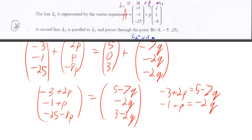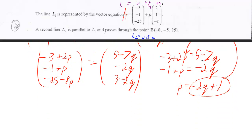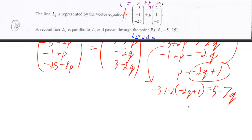So let's solve for p in this bottom one, and then take our answer for p and plug it in to the other one. So if we plug it in to the other one, well, then this equation is going to become negative 3 plus 2 times negative 2q plus 1 is equal to 5 minus 7q.